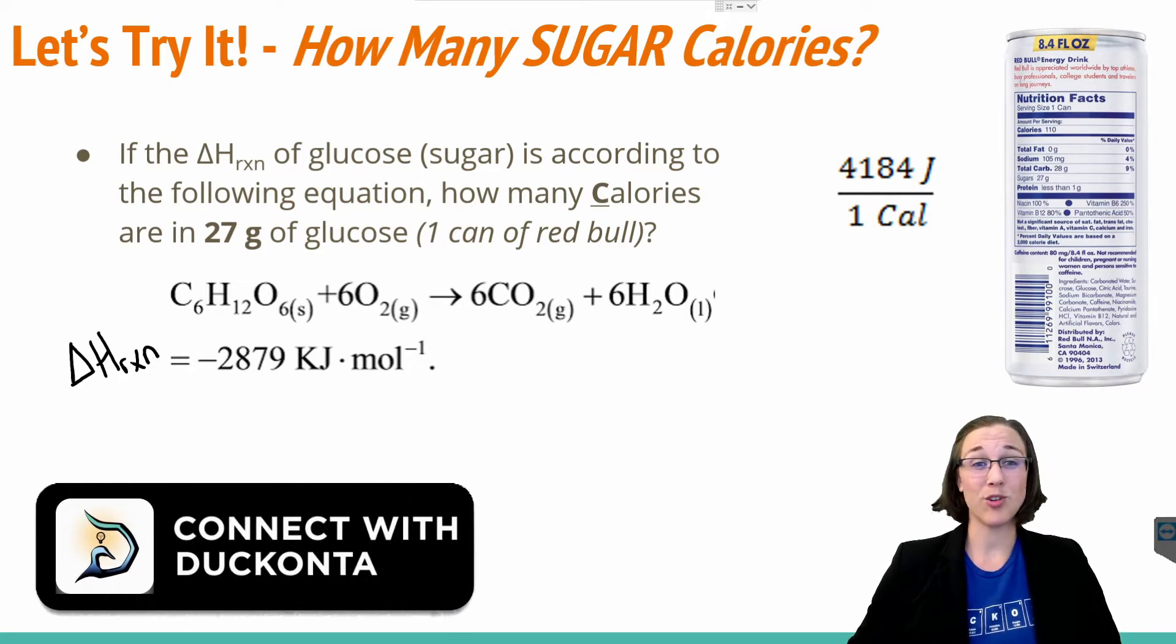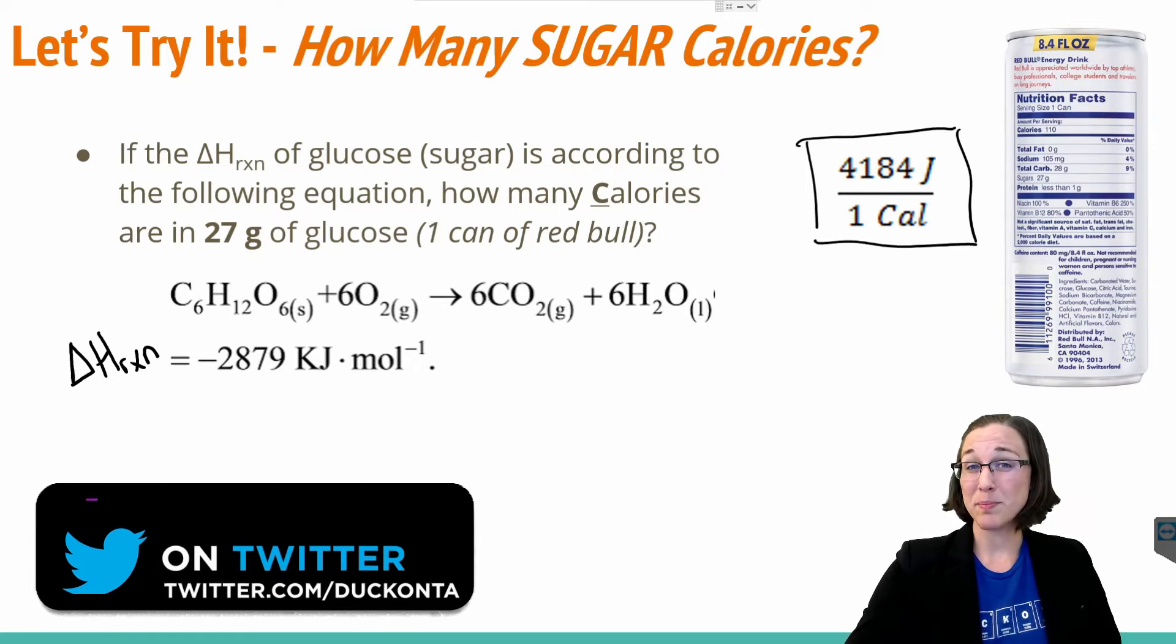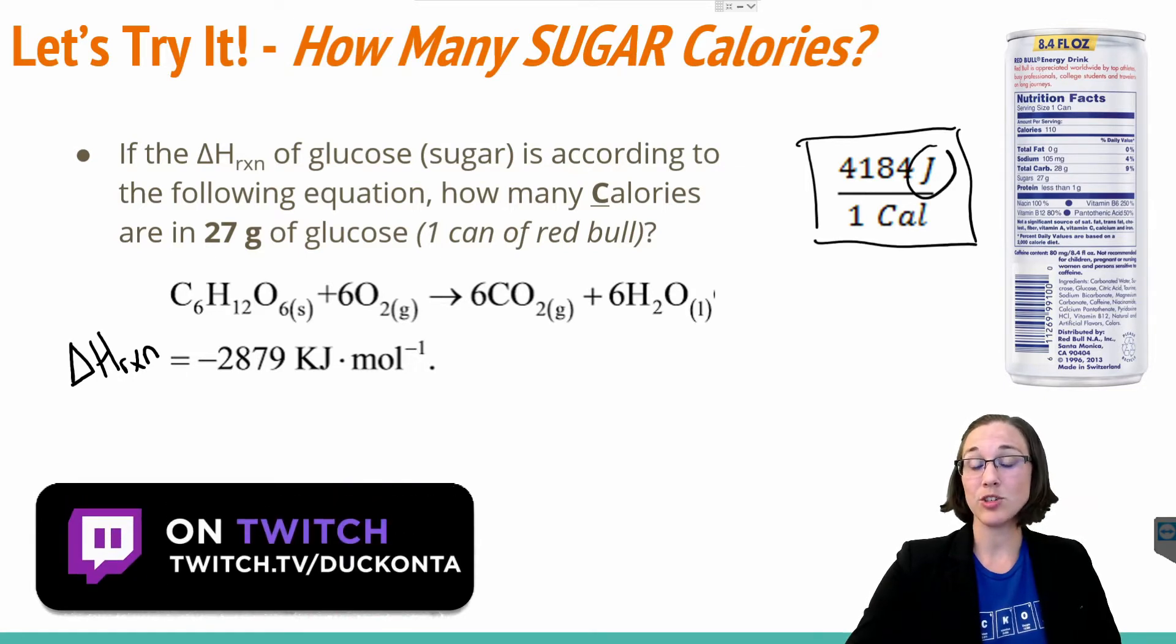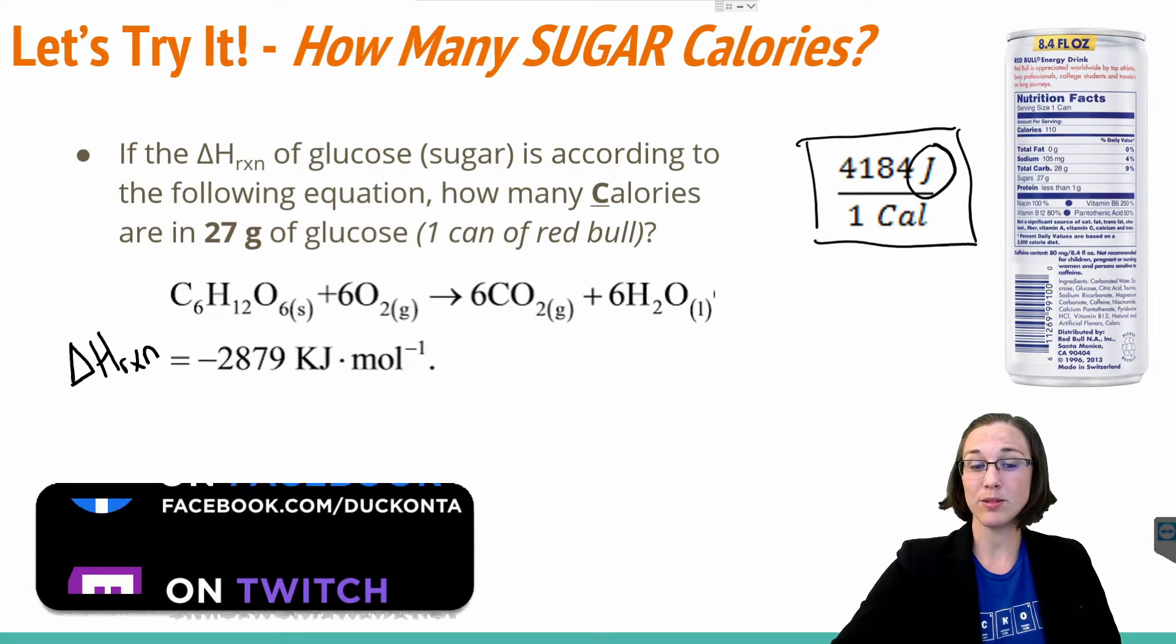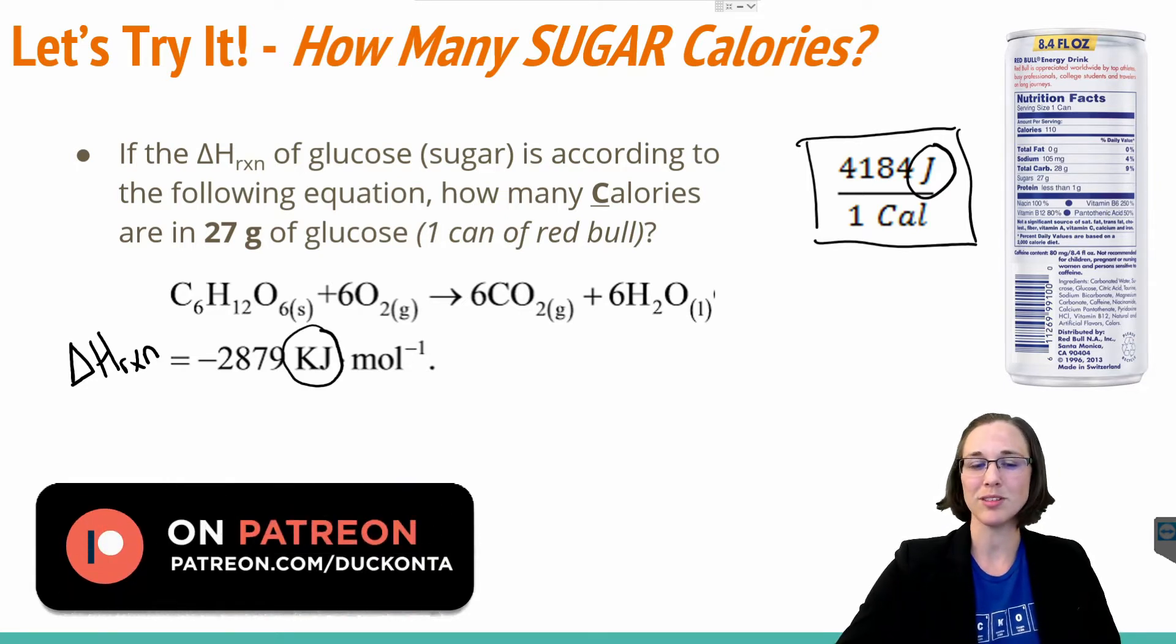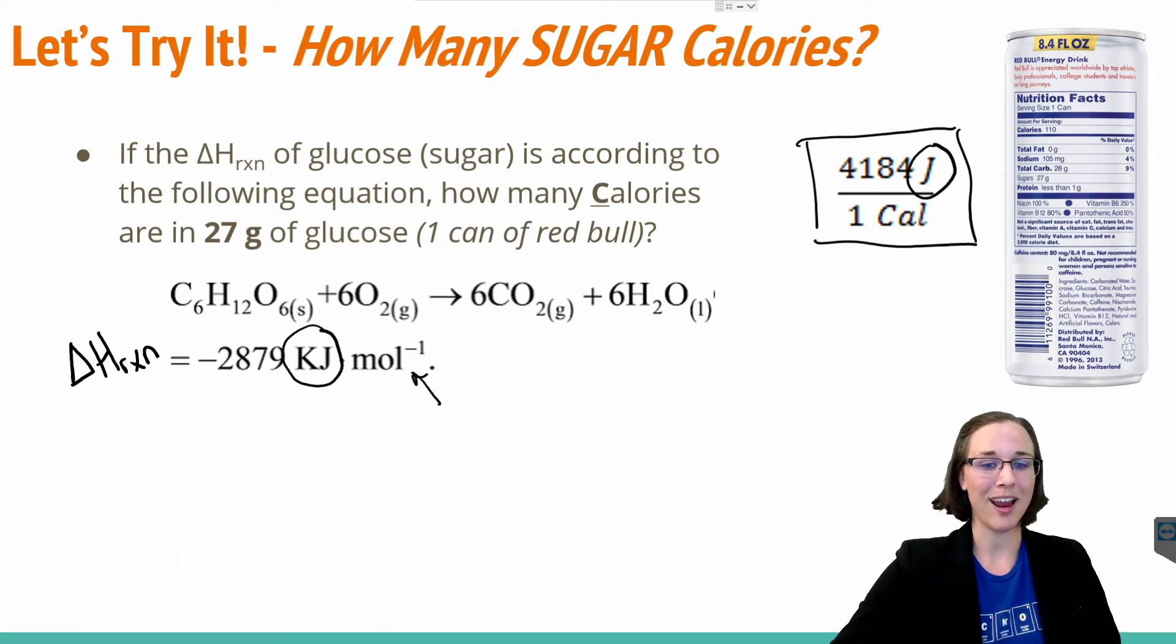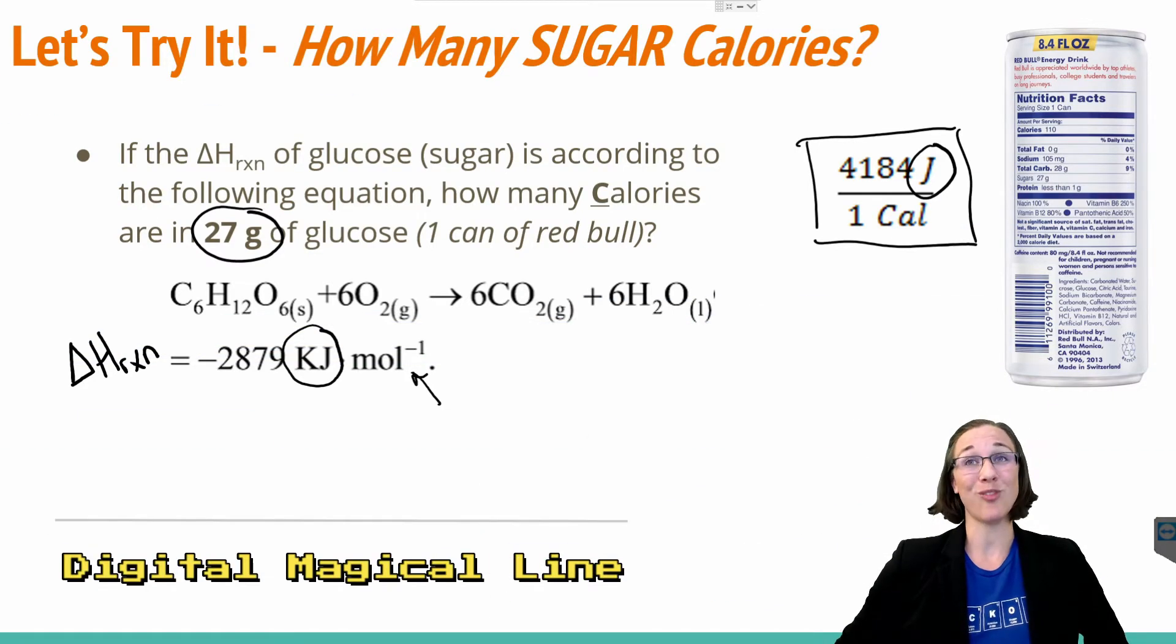Since we're starting with grams and we're trying to find energy in calories, we're going to have to use this conversion factor. So thinking about this backwards, we're going to have to get rid of these joules, which means we can use the delta H of reaction, the kilojoules over here, to get rid of the joules. And we're also going to have to get rid of the moles, which we could use molar mass for. And we're starting with a mass, so that's convenient. Sounds like it's time to draw a magical line to freedom.